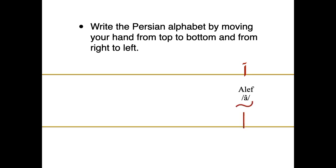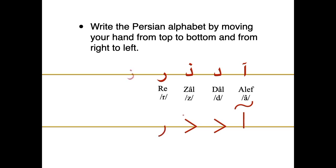The seven non-connecting letters are: Alif, Dahl, Zahl, Re, Ze, Je, and Vav.